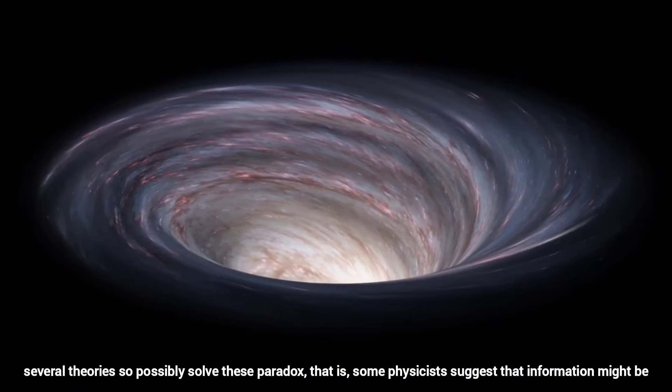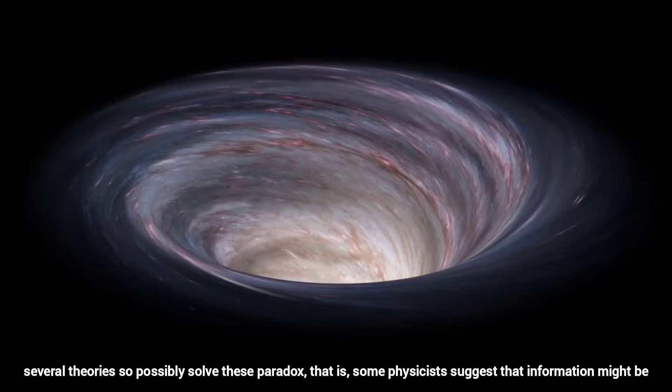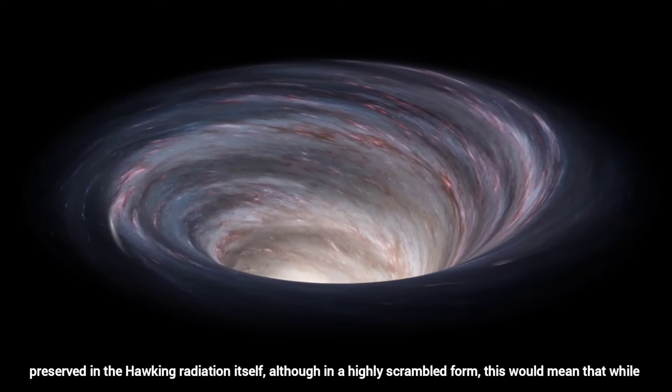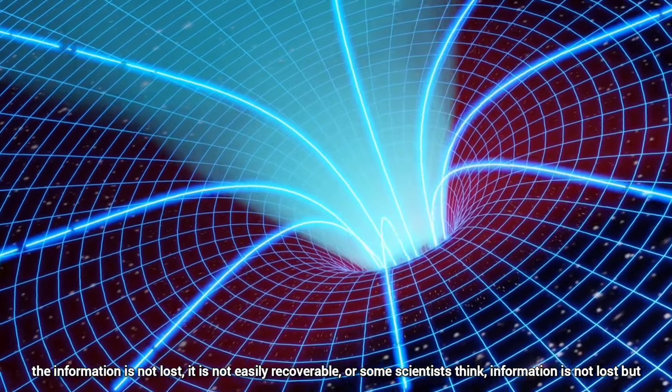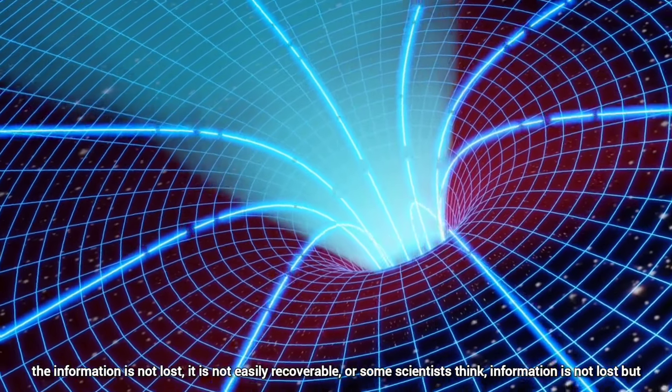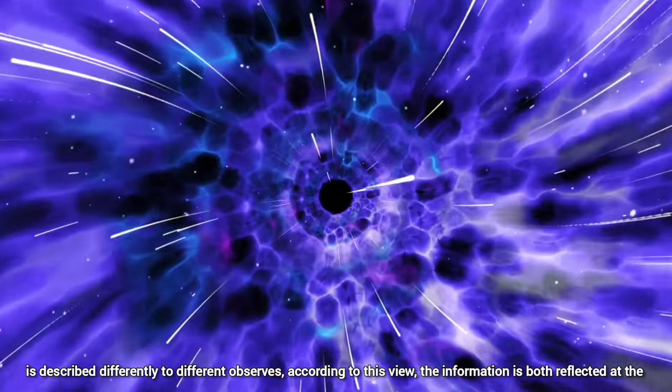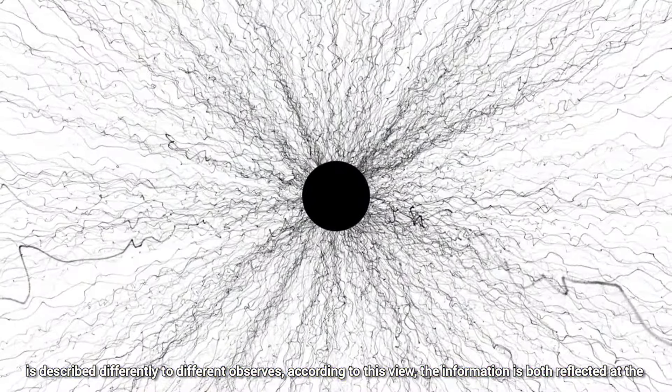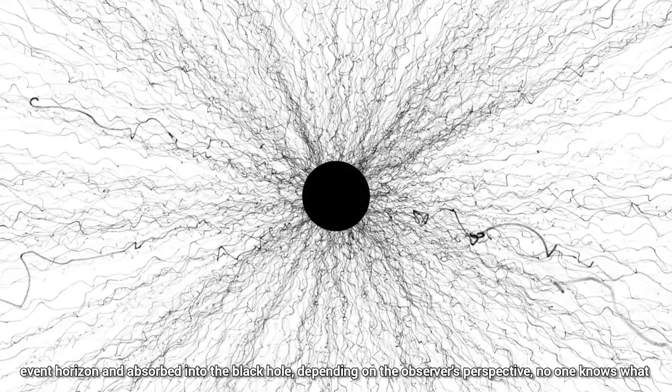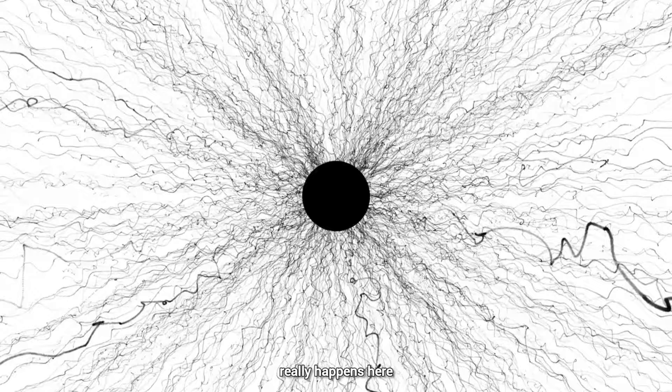So what actually happened here? There are several theories to possibly solve this paradox. Some theories suggest that information might be preserved in the Hawking radiation itself, although in a highly scrambled form. This would mean that while the information is not lost, it is not easily recoverable. Or some scientists think information is not lost but is described differently to different observers. According to this view, the information is both reflected at the event horizon and absorbed into the black hole, depending on the observer's perspective. No one knows what really happened here.